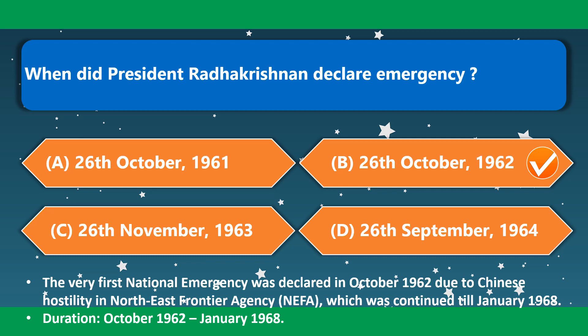When did President Radhakrishnan declare emergency? It was 26th October 1962. The very first national emergency was declared in October 1962 due to Chinese hostility in the North East Frontier Agency, which continued till January 1968.